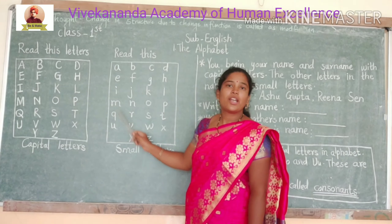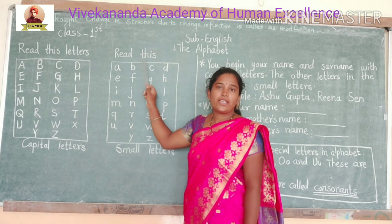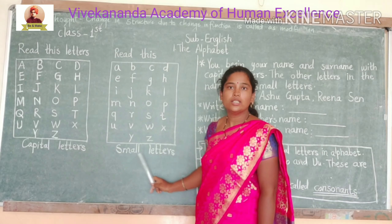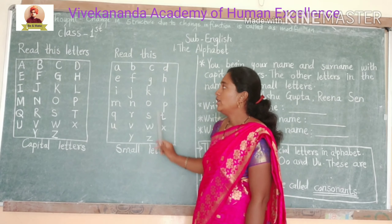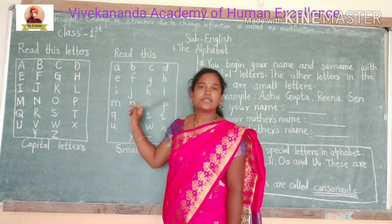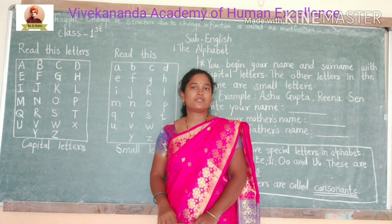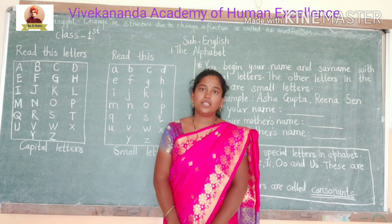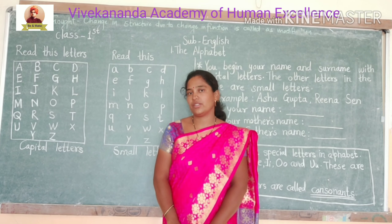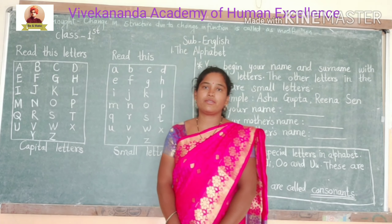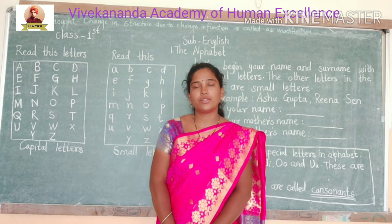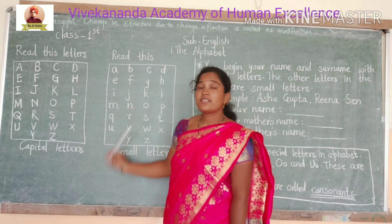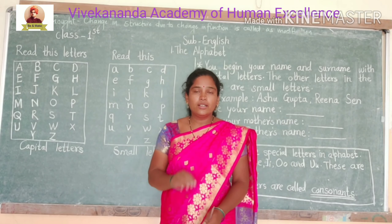When we write like this, these letters are called small letters. If we count these letters, totally 26 letters are there in the English language. The alphabets are 26 alphabets. These letters are called the alphabet.